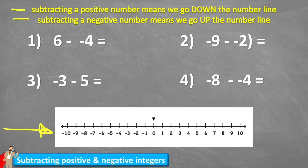The first rule says subtracting a positive number means we go down the number line — that makes sense, doesn't it? If we subtract a normal positive number, we will go down the number line. But then it says subtracting a negative number means we will go up the number line, and that's what's going to be a little bit confusing to understand today. So let's have a look at question one.